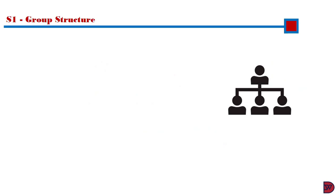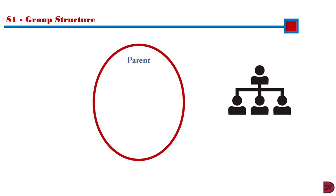I will commence with group structure. The first step is to establish the process of control upon which the preparation of group accounts hinges. For the purposes of convenience, control exists if an entity — the parent — holds more than 50% of the ordinary shares of another entity — the subsidiary. Now, if the parent does not have absolute control, the residual will be the non-controlling interest.